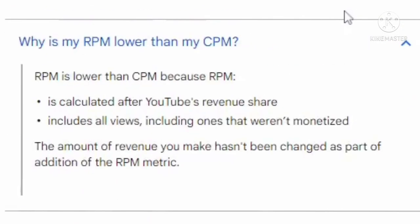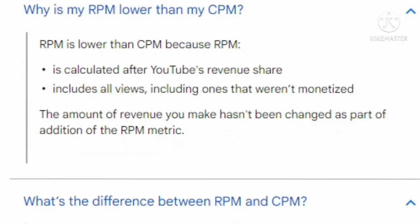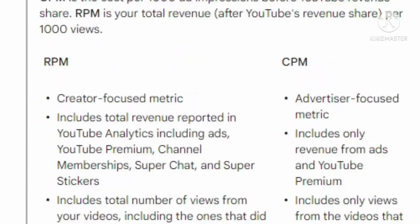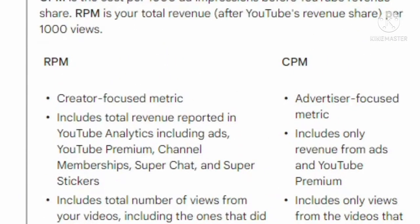Why is my RPM lower than CPM? RPM is lower than CPM because RPM is calculated after YouTube's revenue share. RPM includes all views, including ones that were not monetized. CPM is the cost per 1000 ad impressions before YouTube revenue share, while RPM is your total revenue after YouTube revenue share per 1000 views.